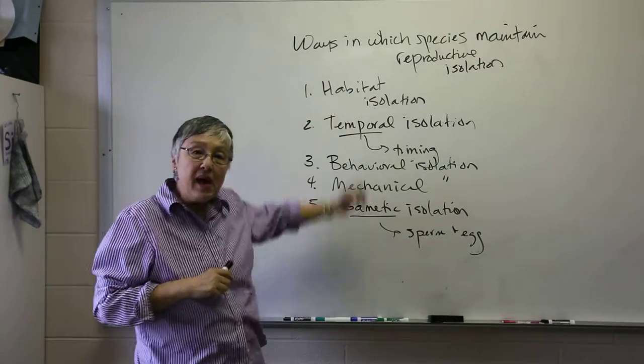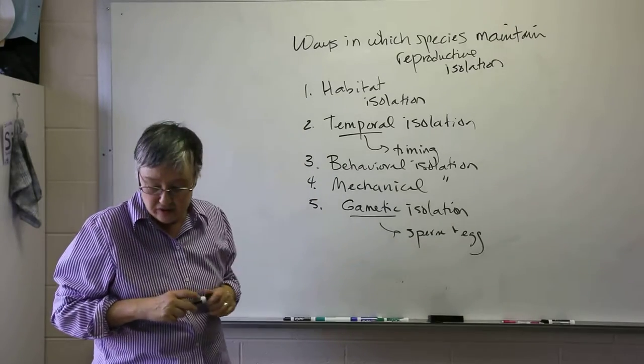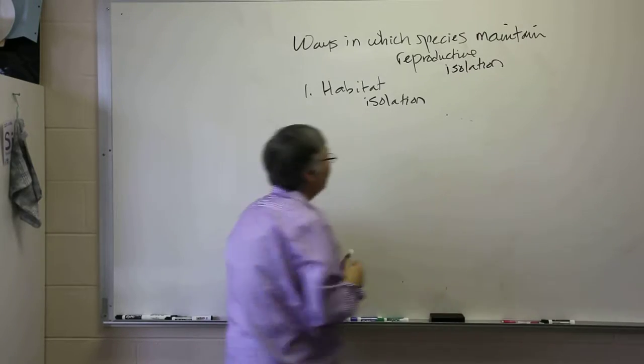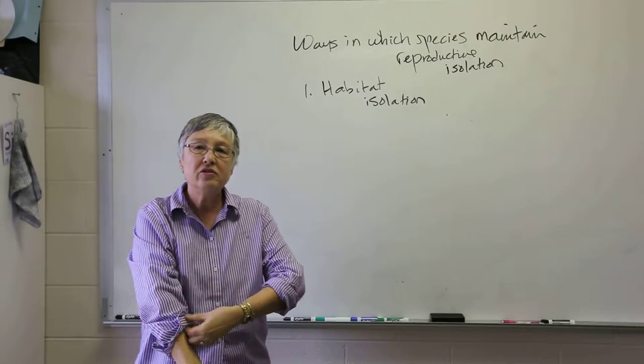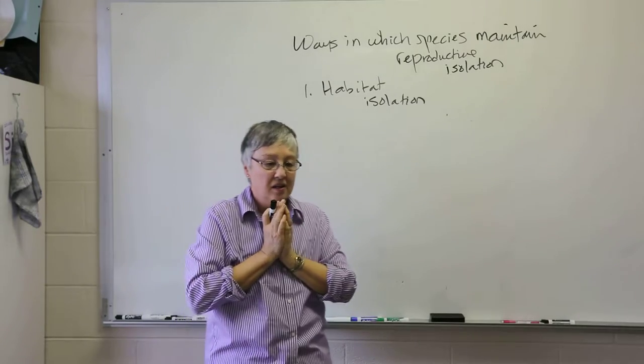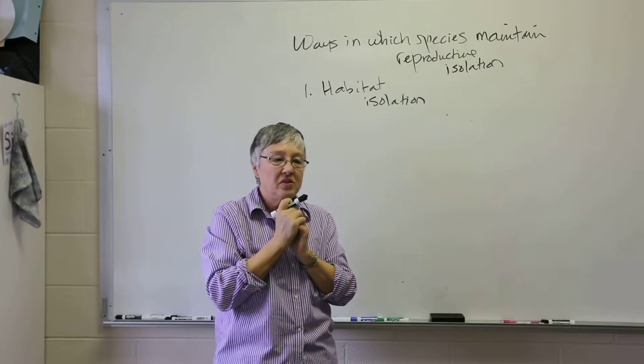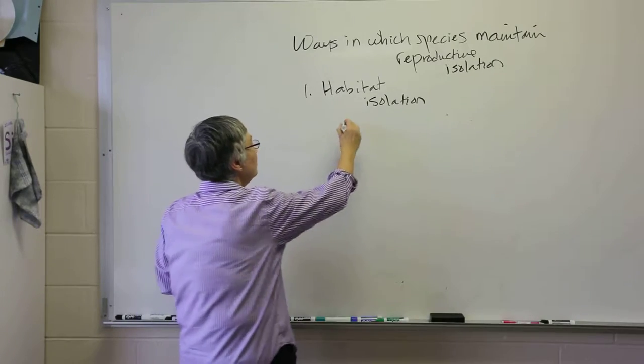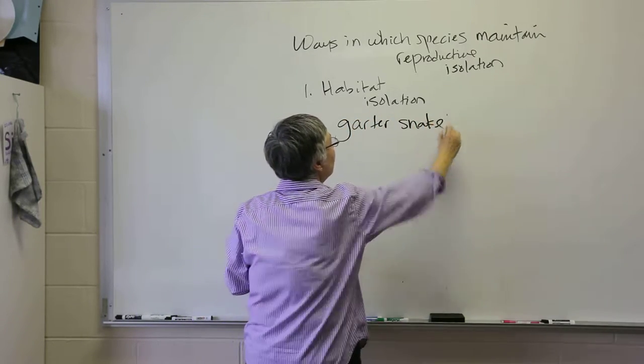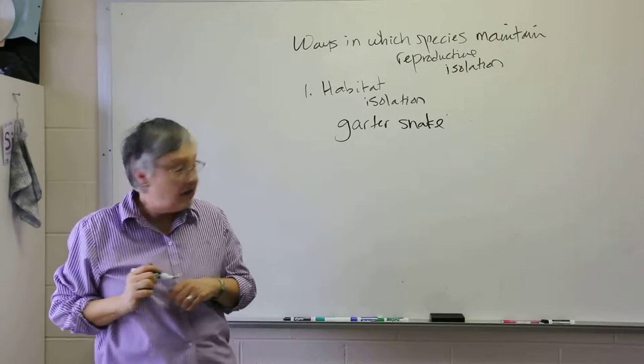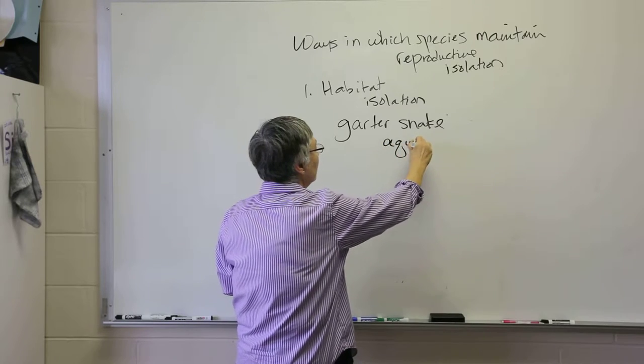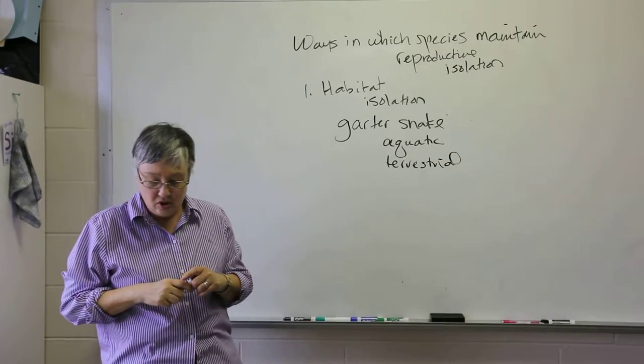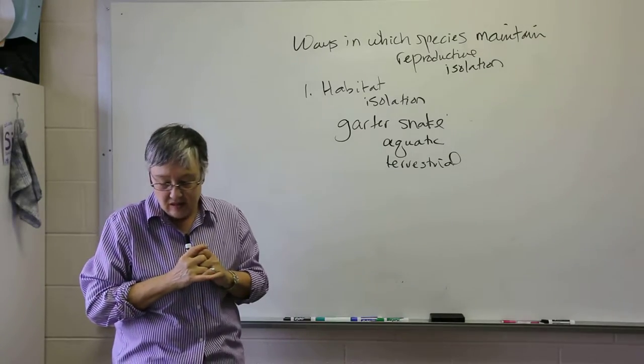All right, so I'm going to come back here and talk briefly about each of these different mechanisms and give examples or at least one example. Habitat isolation just refers to the fact that two similar species might actually reside relatively close to one another, but they're in different habitats. So for example, the garter snake, there are several species. One species is actually aquatic and the other is terrestrial. And so obviously those two are not going to meet and therefore not going to reproduce.